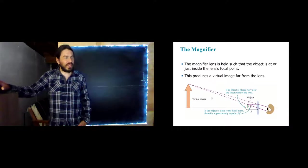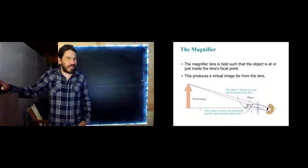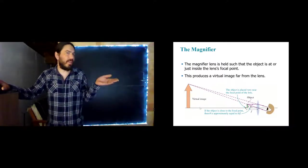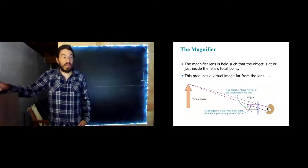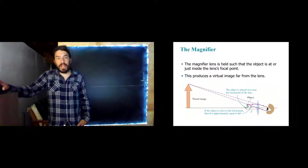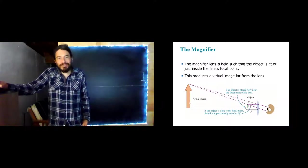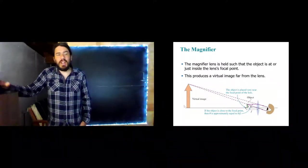And what that does is it gives us a virtual image that is upright and a little bit farther away. You might say, if it moves the image farther away, how does it act as a magnifier? Things that are farther away are harder to see. Well, the answer is it makes it larger also. So it does make it larger and farther away.